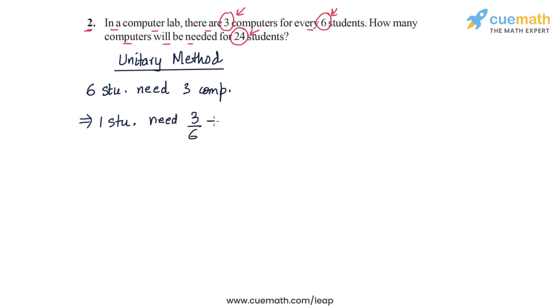This doesn't really make physical sense, but let's keep going forward in this application. So 1 student needs half a computer, and this basically means that 24 students will need how many computers?